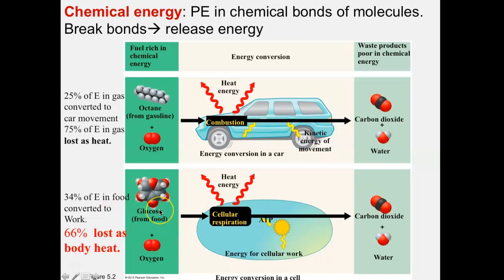It turns out the cell is actually more efficient than the car: 34% versus 25%. So 34% of the energy in food is converted to work, and we lose 66% as body heat — but that's better than a car, which loses 75% as heat. It's kind of depressing when you fill your car up and realize only 25% of your money is going to move the car; the other 75% is just heating up your car and the planet.